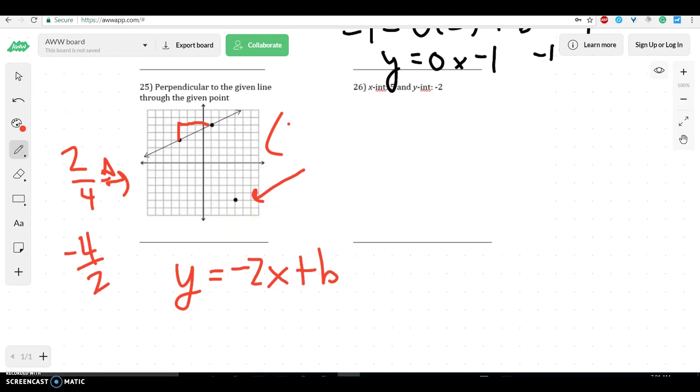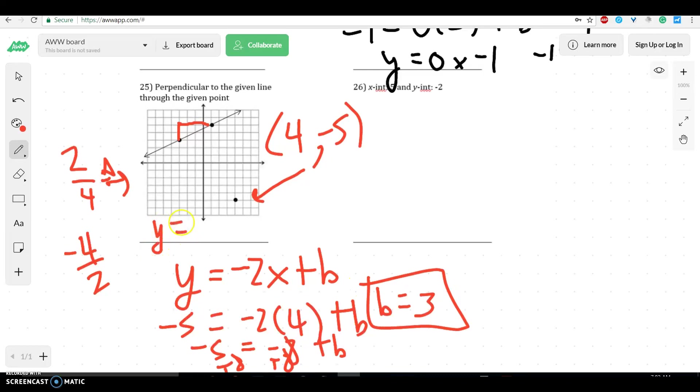So it's (4, negative 5). So we'd plug that in. Negative 5 equals negative 2 times 4 plus b. That'd be negative 5 equals negative 8 plus b. Then I'd add 8 to both sides. And I'd get that b is equal to 3. So then we'd have y equals negative 2x plus 3.